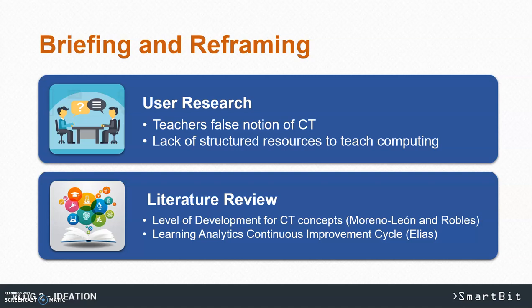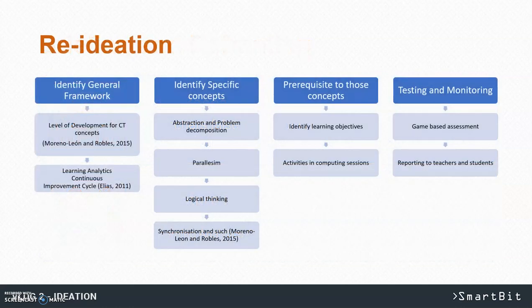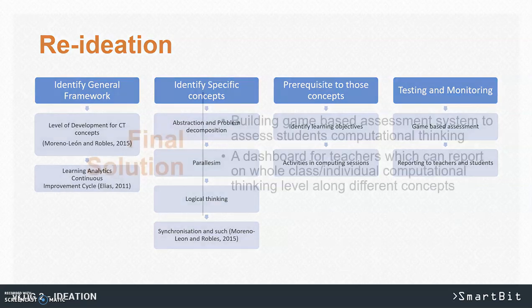We identified from user research that teachers have a false notion of computational thinking and that computing sessions are running in a very unstructured way. With the help of frameworks such as the Mournelian and Robo's computational thinking concepts and aliases, the learning analytics continuous improvement cycle was re-ideated to find solutions to specific problems. Using all user data and literature review, we came up with the idea of a structured assessment to identify students' computational thinking level. To make this possible, we identified general frameworks, specific concepts, prerequisites to these concepts, and tests to monitor around those concepts.